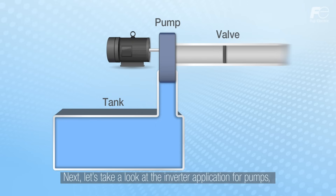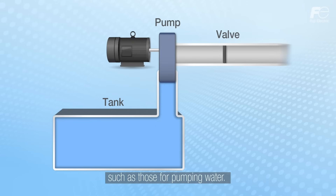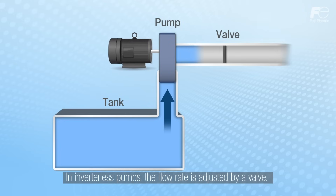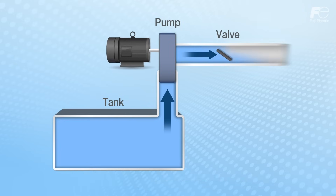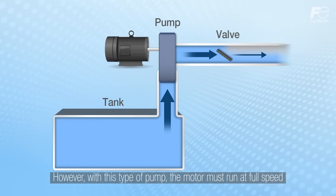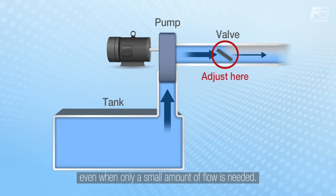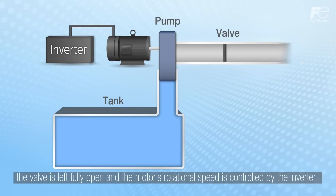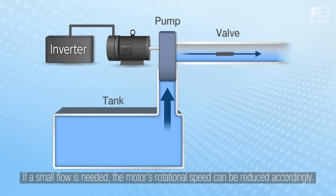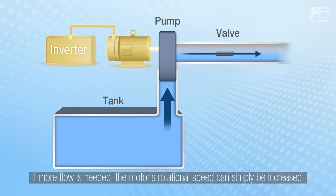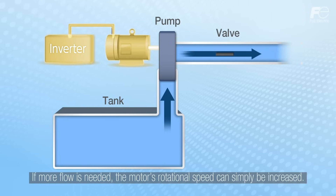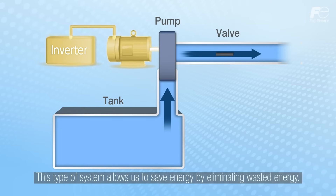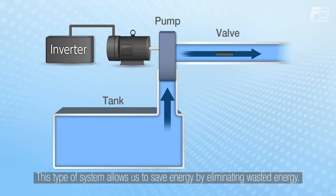Next let's take a look at the inverter application for pumps such as those for pumping water. In inverterless pumps the flow rate is adjusted by a valve. However, with this type of pump the motor must run at full speed even when only a small amount of flow is needed. With an inverter-equipped pump the valve is left fully open and the motor's rotational speed is controlled by the inverter. If a small flow is needed the motor's rotational speed can be reduced accordingly, and if more flow is needed the motor's rotational speed can simply be increased. This type of system allows us to save energy by eliminating wasted energy.